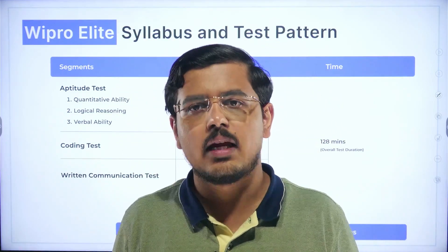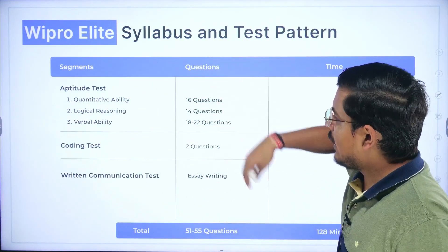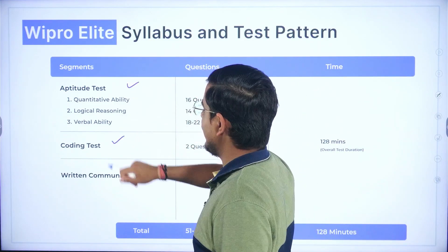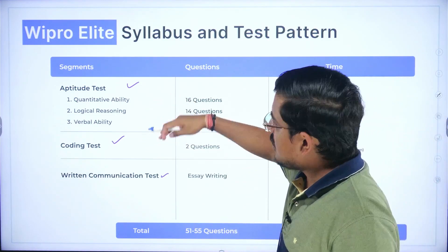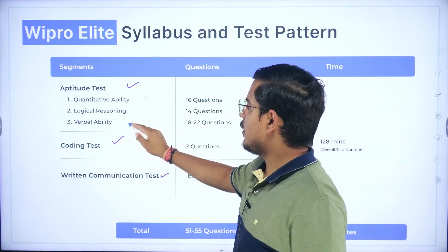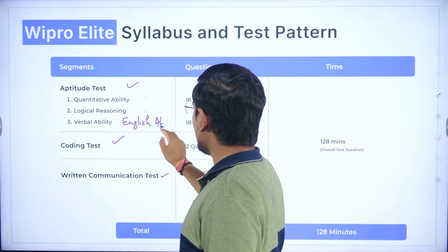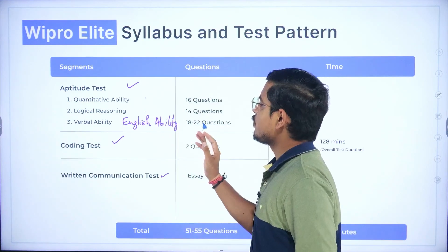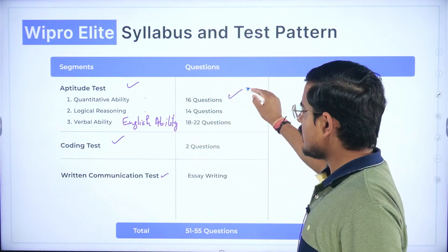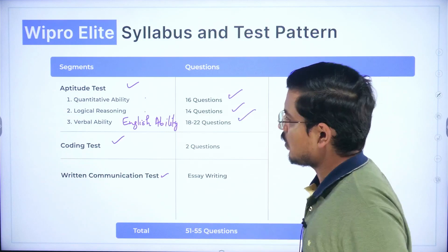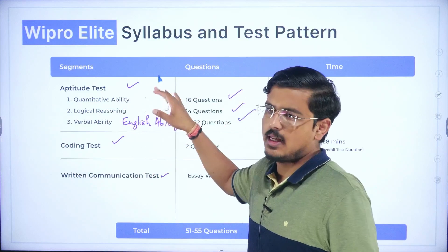Straight away moving to the skeleton of exam as I always do before explaining any syllabus and test pattern. The basic skeleton of online test is that you will have aptitude test, you will have coding test, and then you will have written communication test. In aptitude test there will be three sections which is quantitative ability, logical reasoning, and verbal ability, nowadays it is called English ability.